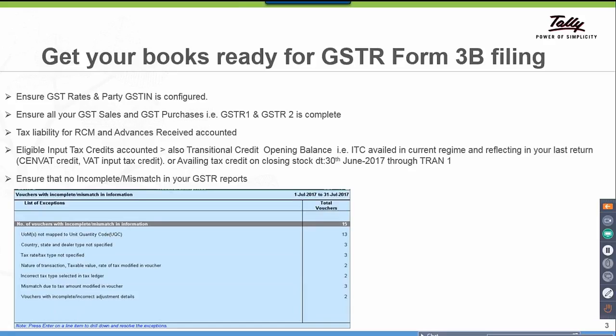These errors are listed on priority. The exceptions could be like you have not selected the country, state, and dealer type, and tax rates are not specified. The nature of transaction is not updated, and there could be incorrect tax ledgers selected during the transactions. These are highlighted when you try to generate your Form 3B as exceptions, and you have to drill down to these exceptions and resolve them.